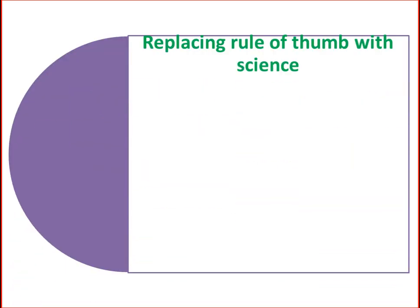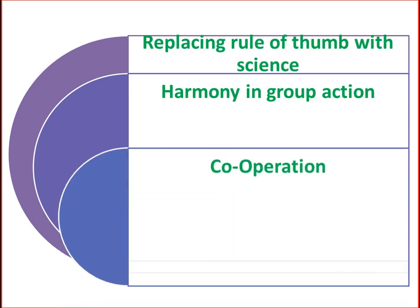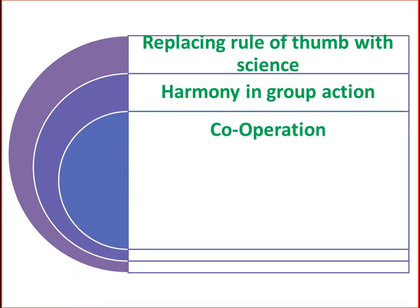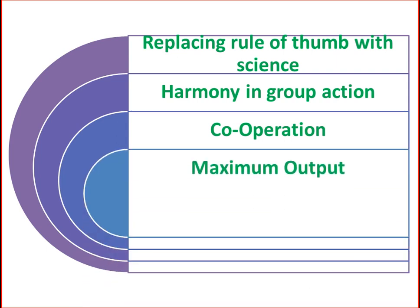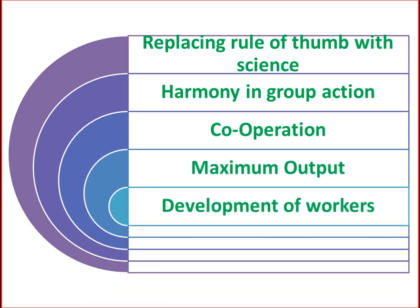The five principles of scientific management are: first, replacing rule of thumb with science; second, harmony in group actions; third, cooperation; fourth, maximum output; and fifth, development of workers.